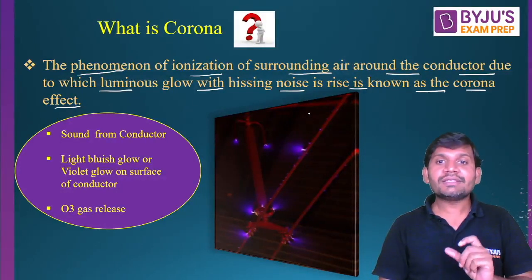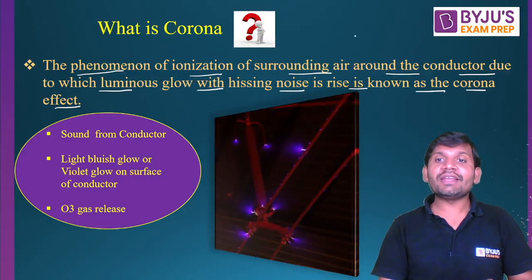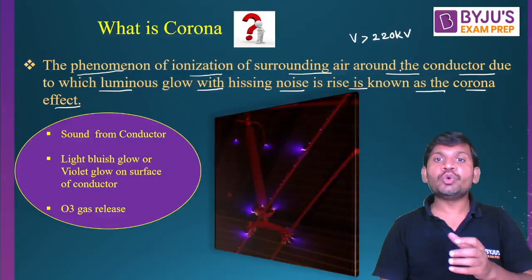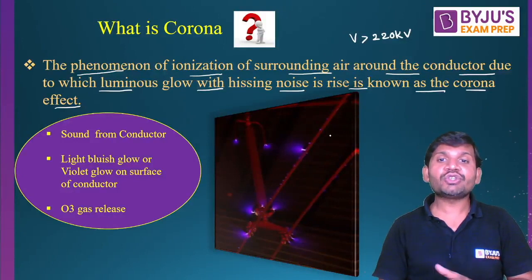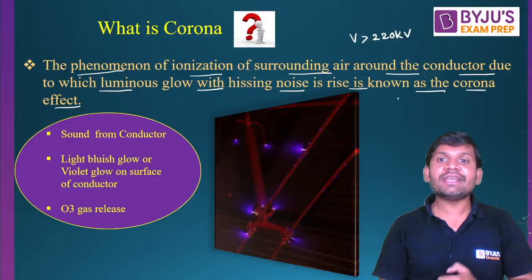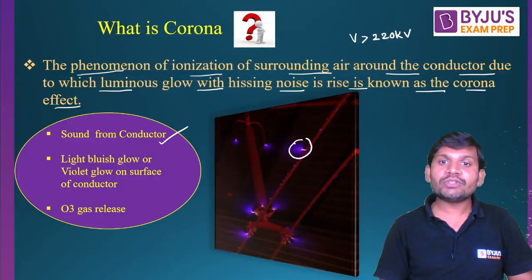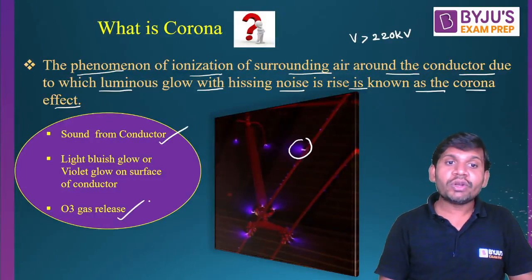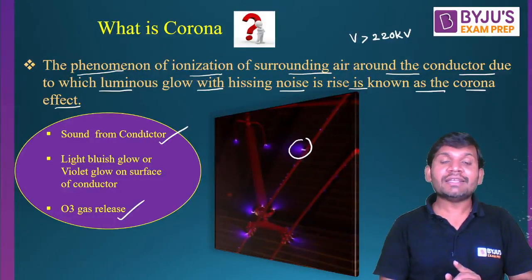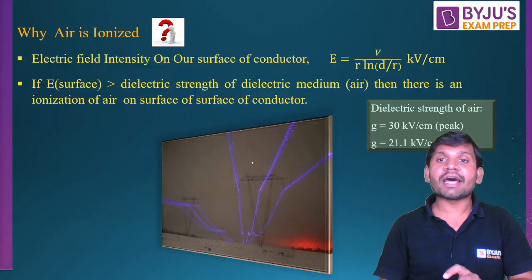Once the lines are operating at high voltages — this corona effect is more appreciable for voltages greater than 220 kV. Because of ionization of the air around the conductor, a luminous glow with hissing noise rises, and that is known as corona. Due to corona, there is a sound from the conductor, a light bluish or violet glow on the surface of the conductor, and ozone gas (O3) is also released.